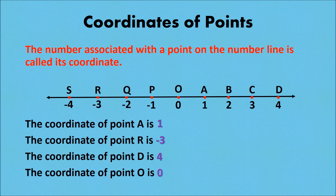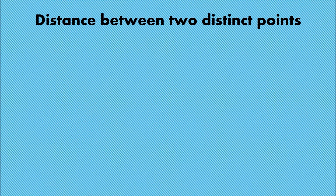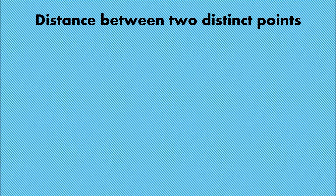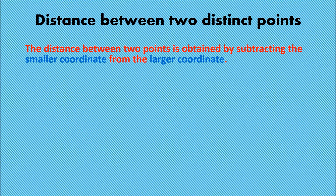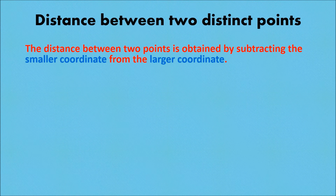Distance between two distinct points — what do you mean by distance between two distinct points, or how to calculate distance between two distinct points? The distance between two points is obtained by subtracting the smaller coordinate from the larger coordinate.